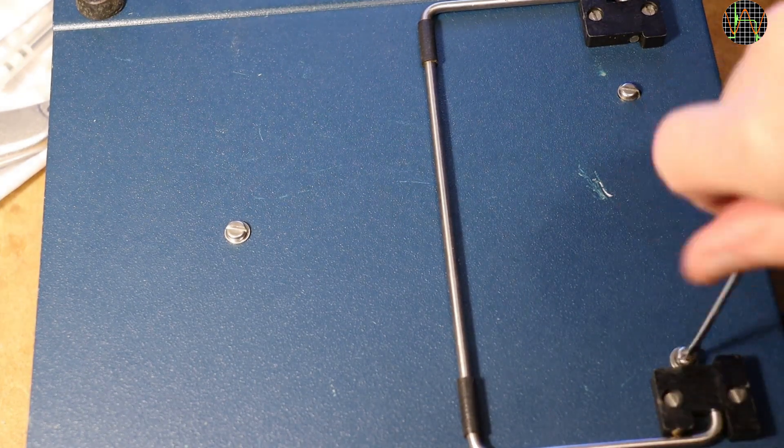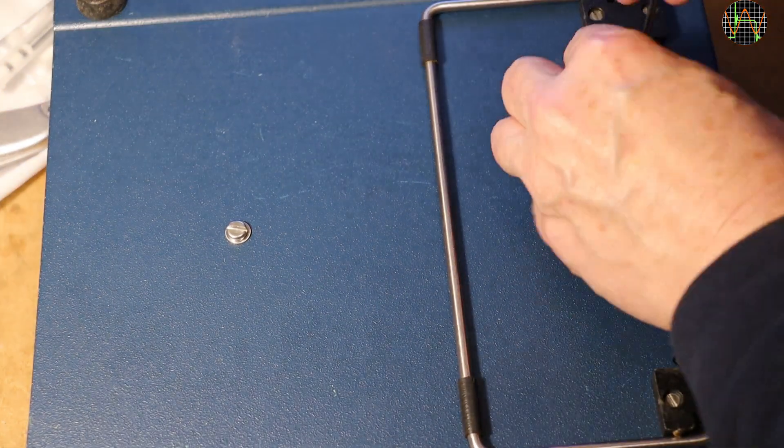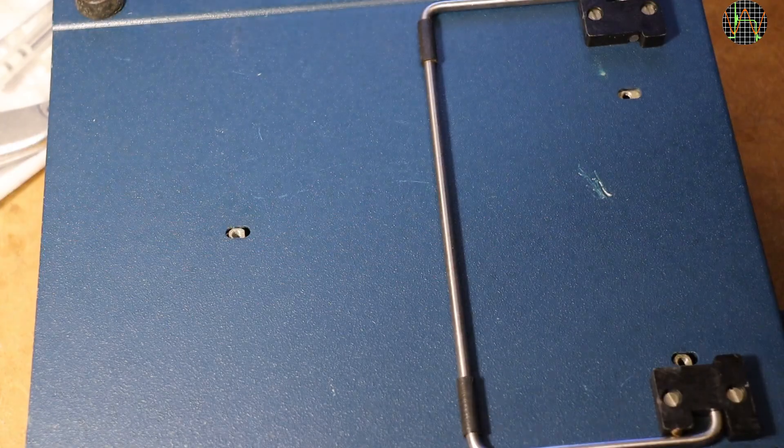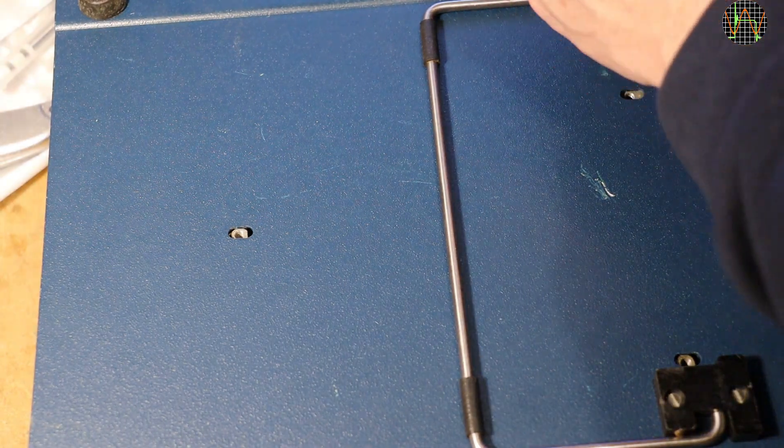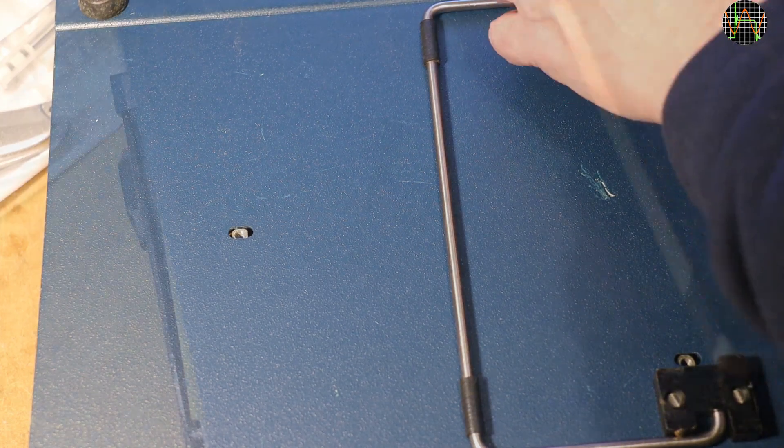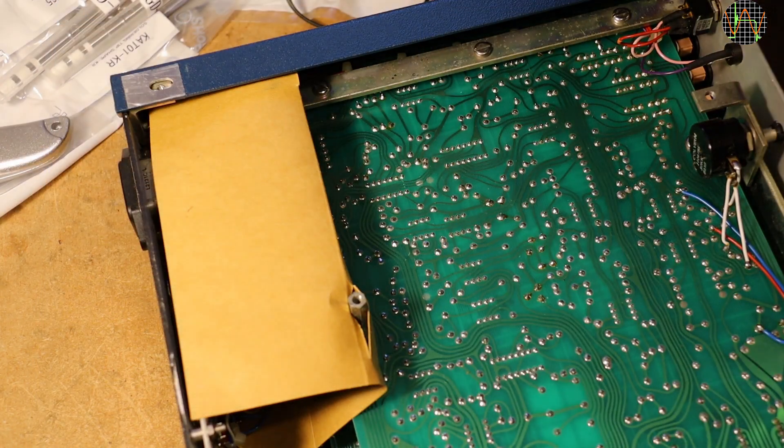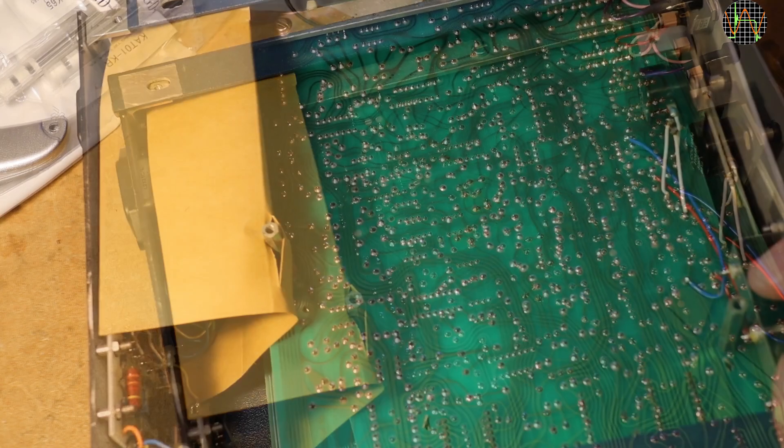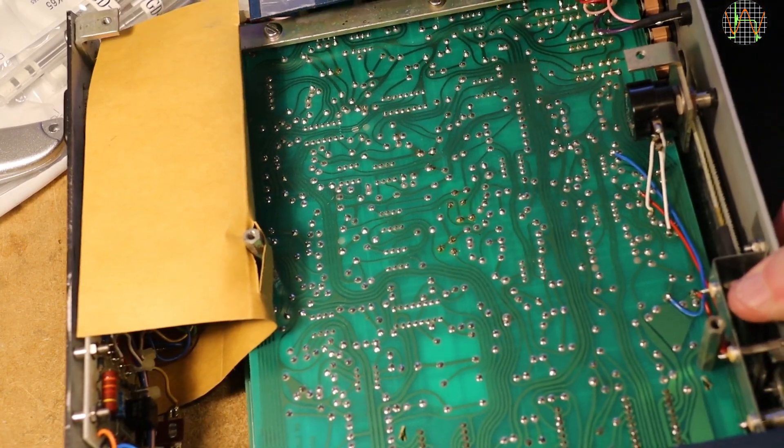There are 3 main screws on the bottom but then it turns out the feet have to be removed too, so in total 7 screws to remove. This finally allows removing the bottom lid and also to slide out the whole chassis out of the enclosure.